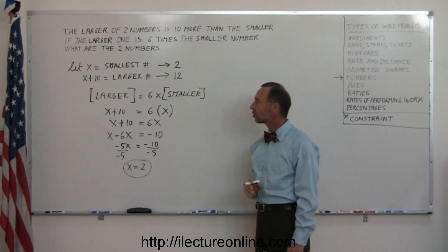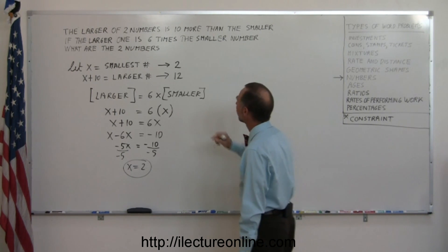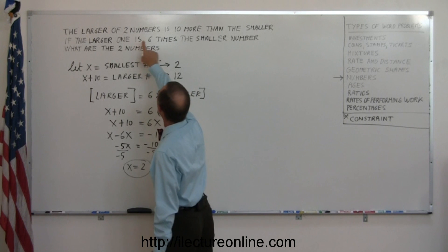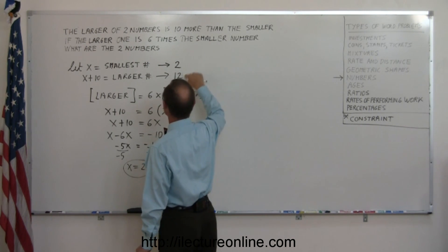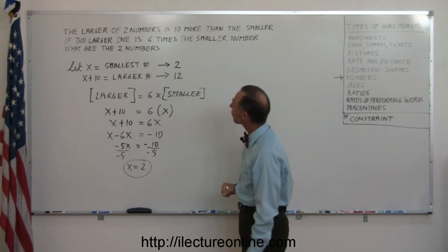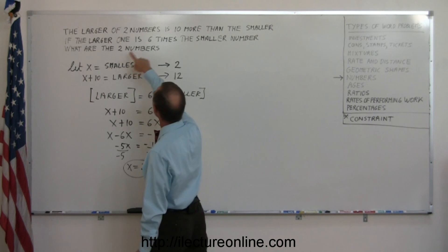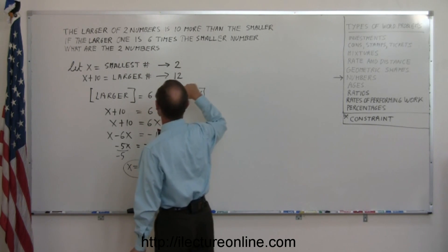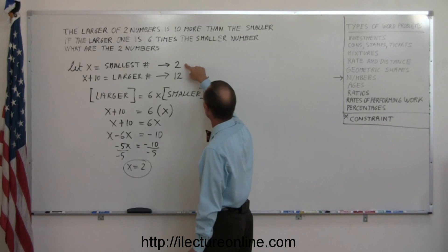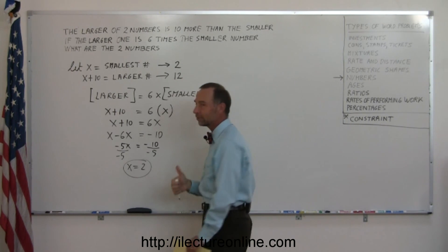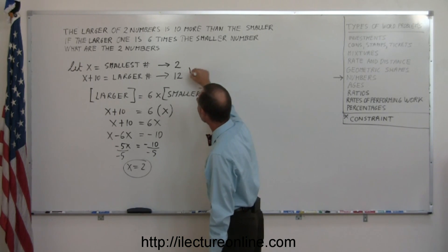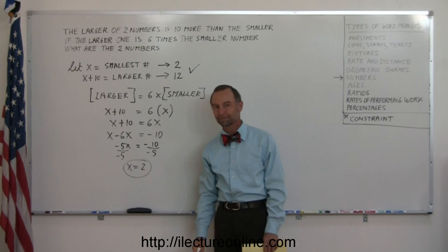Now just to make sure we did this correctly, let's go back and make sure that it matches. The larger of the two numbers is 10 more than the small one. 12 is 10 more than 2. So that works. And the next one says if the larger one is 6 times the smaller number, well, let's see. 12 is 6 times 2. That's true. 6 times 2 is 12. So we did it. That's the answer.